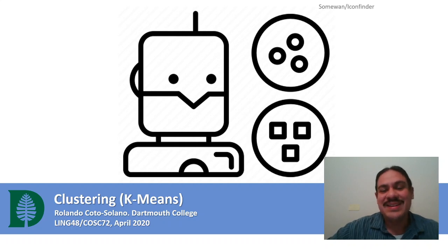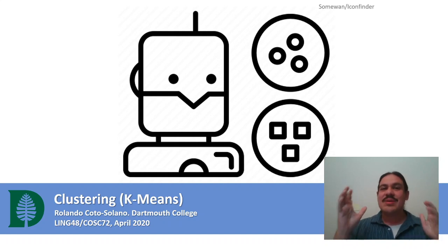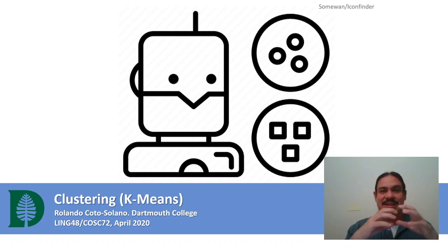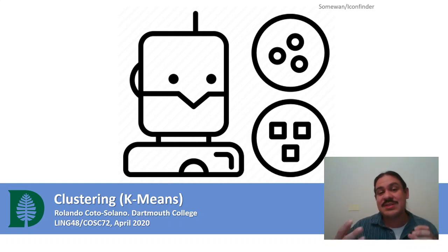Hi and welcome back. In previous videos we've been looking at documents and distances between documents. Now we're going to try to have the computer learn by itself how to create clusters that contain similar types of documents. We're going to look at a specific algorithm to do this called k-means.